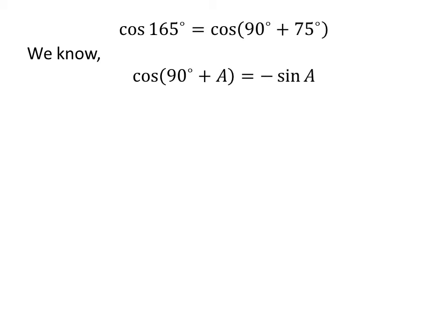We know the trigonometry identity: cosine of 90 degrees plus A is equal to minus sine of A. The proof of this trigonometry identity is given in the video appearing in the upper right corner of this video. The link of the video is also given in the description section.